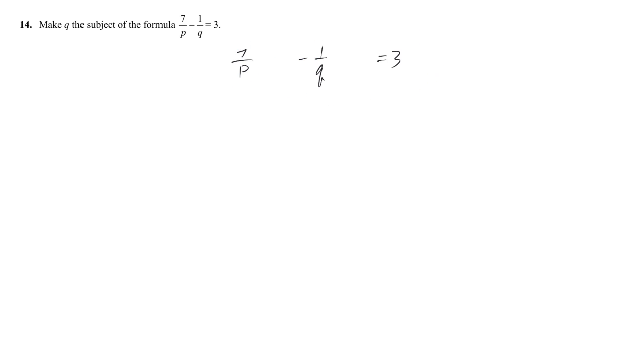Now, we have an equation here. Our target is still make Q the subject. That means our target is Q equal to something. But it's not difficult to do so. It's because now we have two fractions here.